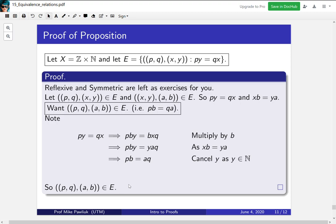One of the reasons I like this proof is that it shows off why the denominator has to be a natural number, and not just an integer. If this y was a zero, you wouldn't be able to cancel.